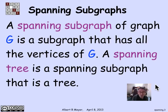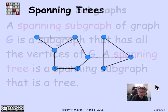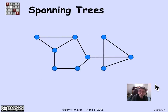Not all graphs are going to have a spanning tree because the tree has to be connected. If the original graph is not connected, there's no way you can find a spanning tree using only the edges that are there already. But it turns out that if the graph is connected, it's guaranteed to have a spanning tree.